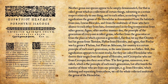Now let's follow along with Chapter Two on Genus. Porphyry writes: 'Neither genus nor species appear to be simply denominated, for that is called genus which is a collection of certain things subsisting in a certain respect relatively to one thing and to each other.' 'Denominated' — from the Latin 'nomine,' meaning name — so to denominate means to name or categorize something.